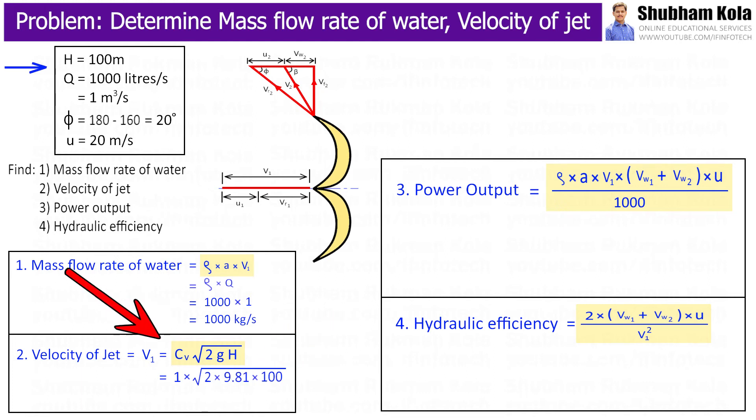And since coefficient of velocity is not given in the problem, I will assume Cv equal to 1. Therefore, by calculating this, we will get velocity of jet equal to 44.3 m per second.